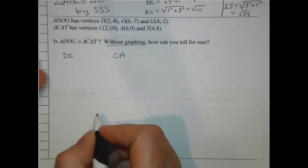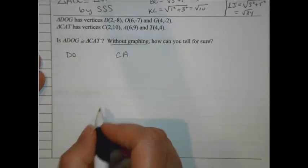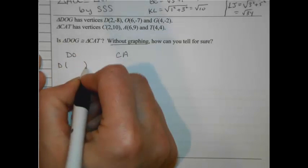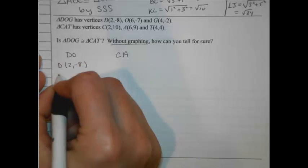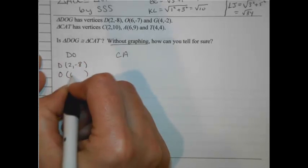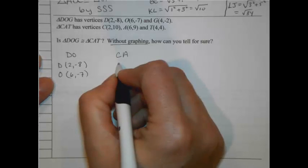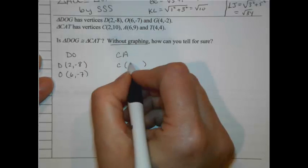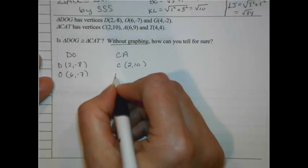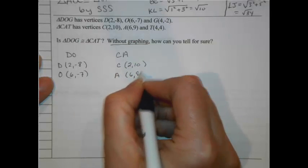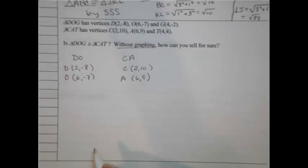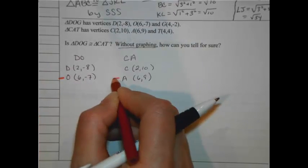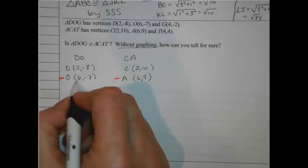So let's see if those give us the same answers. In this case, I'm going to do my point stack strategy. So for D, I've got (2, -8). And for O, I've got (6, -7). Over here for CA, I've got for C, I've got (2, 10). And A is listed as (6, 9). Those are my point stacks.